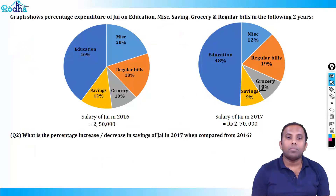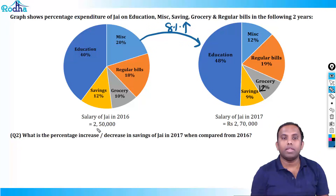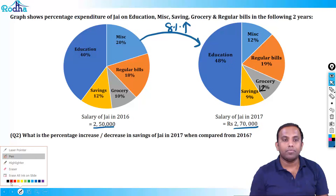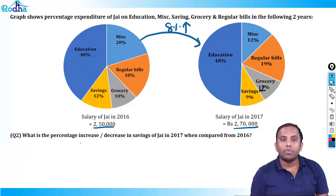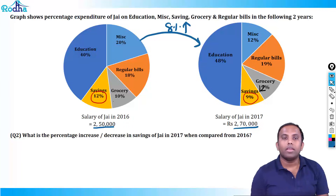Second question: what is the percentage increase or decrease in the savings of J in 2017 when compared to 2016? This percentage change from pie chart to pie chart is always 8% — the pie chart is greater by 8% from 2,50,000 to 2,70,000. Savings here is 12% and here is 9%.